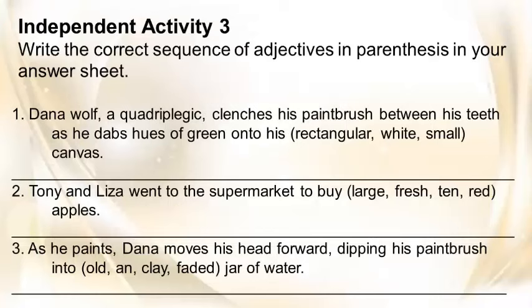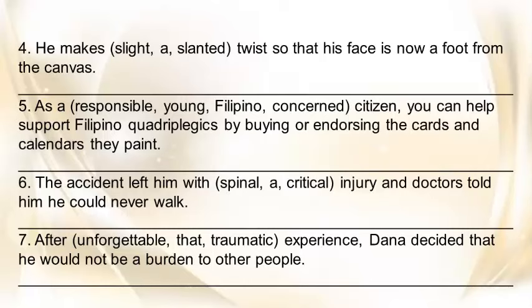Independent Activity 3: Write the correct sequence of adjectives in parenthesis in your answer sheet. 1. Dana Wolf, a quadriplegic, clenches his paintbrush between his teeth as he dabs hues of green onto his (rectangular, white, small) canvas. 2. Tony and Liza went to the supermarket to buy (large, fresh, ten, red) apples. 3. As he paints, Dana moves his head forward, dipping his paintbrush into an (old, clay, faded) jar of water. 4. He makes a (slight, slanted) twist so that his face is now a foot from the canvas. 5. As a (responsible, young, Filipino, concerned) citizen, you can help support Filipino quadriplegics by buying or endorsing the cards and calendars they paint.